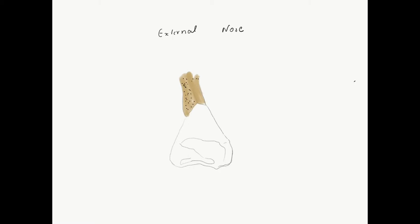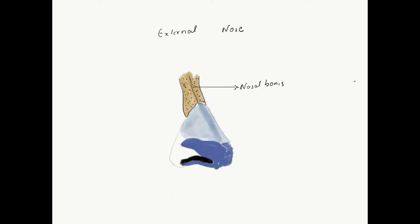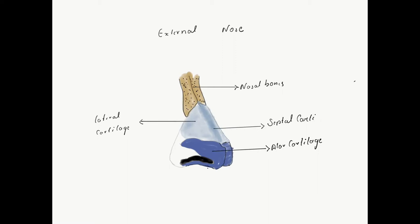The external nose is actually an osteocartilaginous network. It consists of the nasal bones which unite in the midline, and inferiorly we have the cartilaginous part formed by the upper lateral cartilage superiorly and the alar cartilage inferiorly. The midline is mainly contributed by the septal cartilage which forms the septum, and laterally many small cartilages known as lesser alar cartilages contribute to the external nose.